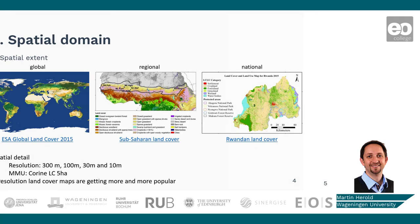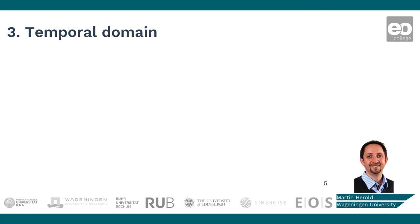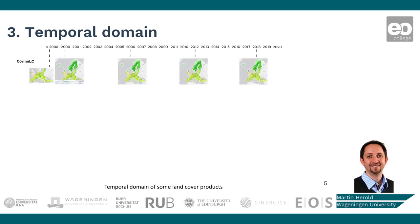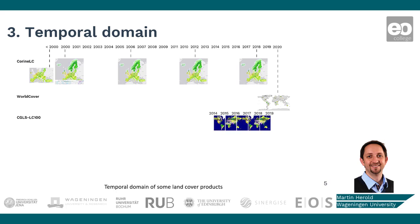In terms of the temporal domain, this reflects what date and time frame the map is covering. First of all, you have static or multi-temporal maps. Multi-temporal means you have multiple maps at multiple points in time. Static maps are still the most common, providing a representation commonly for one year or a longer period. If you have multi-date maps, you have to consider the temporal resolution — that is, whether the maps are produced yearly, every five years, or at longer intervals.